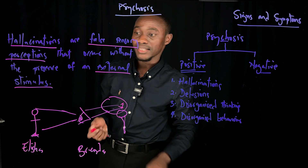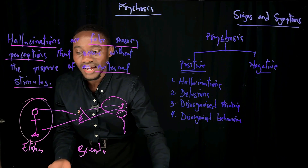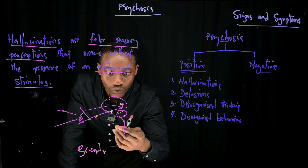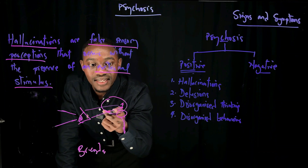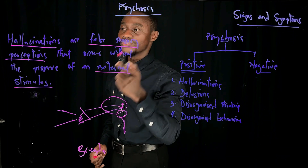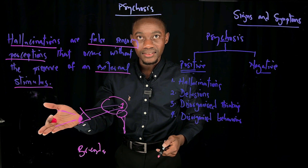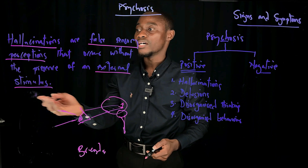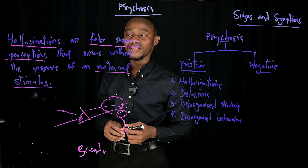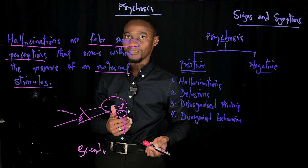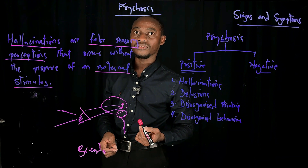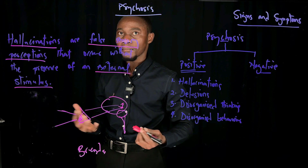But in the case of hallucinations, this stimulus — that is Elisha — is out of the picture. Meanwhile, Brenda's brain, for whatever reason, is still perceiving that there is something there that seems so real to Brenda. That is why hallucinations are false sensory perceptions — they are perceptions, but they are false because there is no external stimulus. Typically, hallucinations occur in clear consciousness, not when an individual is sleeping. The individual also does not have any control over the hallucinations; they come by themselves.